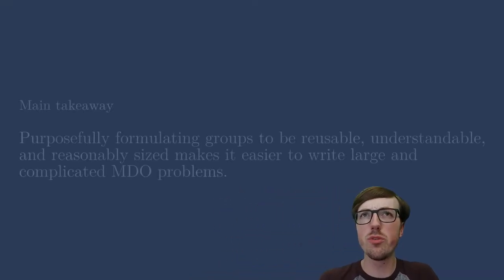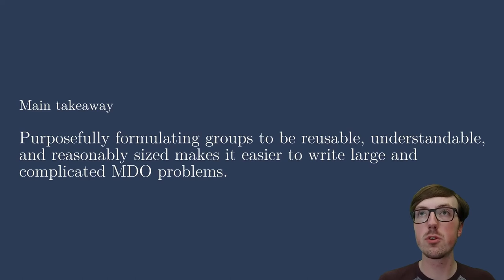So here's a closing statement. I'm saying that purposefully formulating your groups to be reusable, understandable, and reasonably sized makes it very easy to write large and complicated MDO problems. You can imagine if you have a thousand variables at the top level, it's going to be tough to understand what's going on there. But if you have 10 groups of 10 variables, and you stamp these out in different ways, all of a sudden that becomes much more comprehensible. So here I'm really suggesting take a look at your model. Take a look at how you could group it so that you can understand it better, you can use it for other models, and that you can pass it off to others.